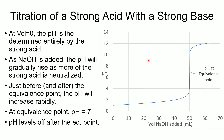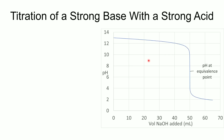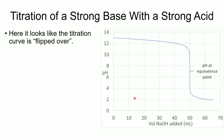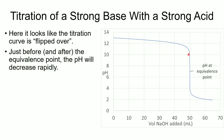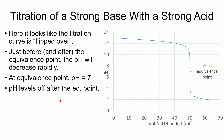Now let's look at the opposite situation: titrating a strong base with a strong acid. Here we start off with a very high pH, and the whole curve looks flipped. The pH gradually decreases as we add strong acid, then drops very quickly just before the equivalence point. Since it's still a strong acid and strong base system, the pH at the equivalence point is again 7. After the equivalence point, the pH continues to drop and levels off as excess acid is added.